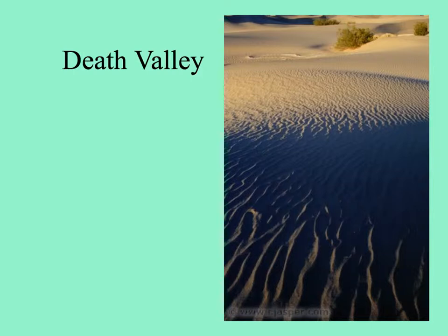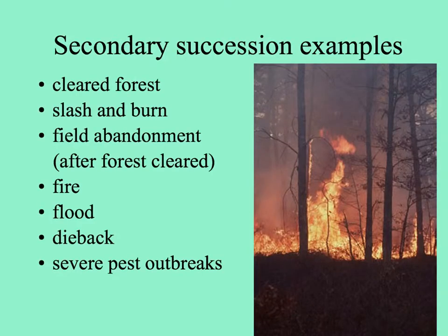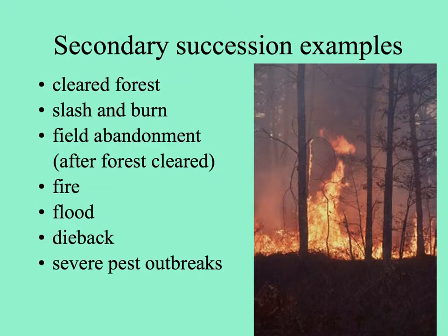Even in the middle of a continent, you can have primary succession on dunes, such as these sandy areas in Death Valley. There are lots of examples of secondary succession as well. When forests are cleared for logging and then left, things can start to grow again. In the New World tropics, slash-and-burn agriculture was common, and fields left after crops were grown for a few years are recolonized. Field abandonment anywhere in the world can experience secondary succession, and many habitats are successional due to fire, flooding, and sometimes dieback caused by insects, disease, or other pest outbreaks.